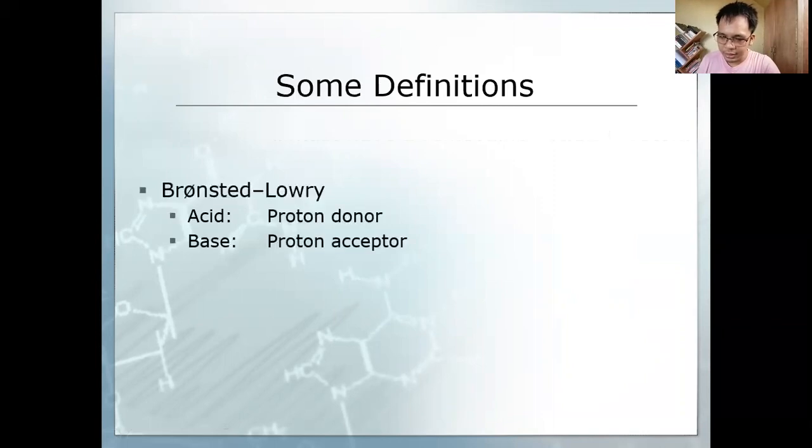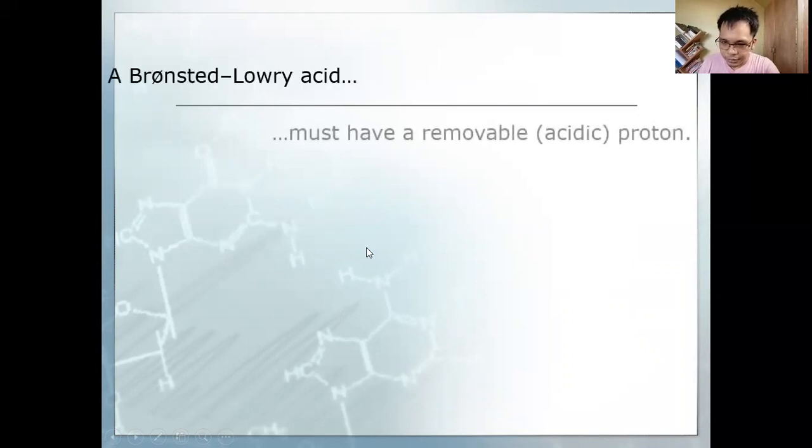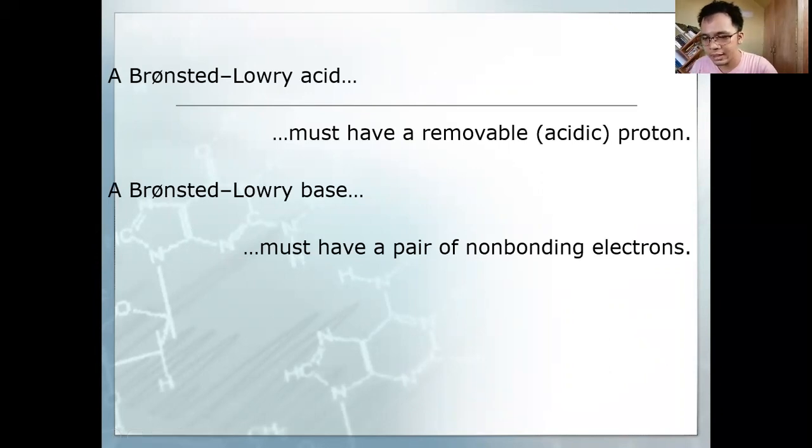For Bronsted-Lowry, his definition of acids and bases is different. The acid is a proton donor, and the base is a proton acceptor. The proton is a hydrogen ion. A Bronsted-Lowry acid must have a removable acidic proton, which is the hydrogen ion. A Bronsted-Lowry base must have a pair of non-bonding electrons, which is the lone pair you can see in the Lewis structure.